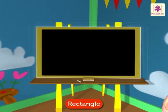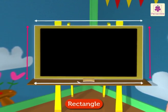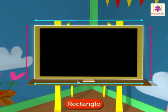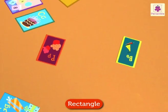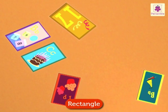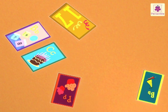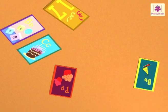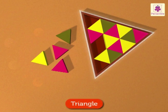Look at these colored flashcards — they are all rectangle in shape. Hey, can you see the puzzle? It is triangle in shape.